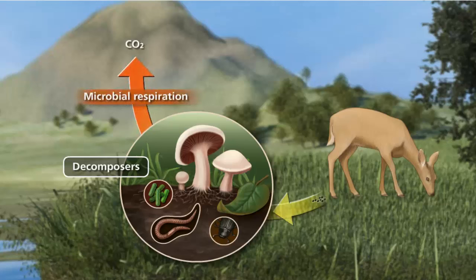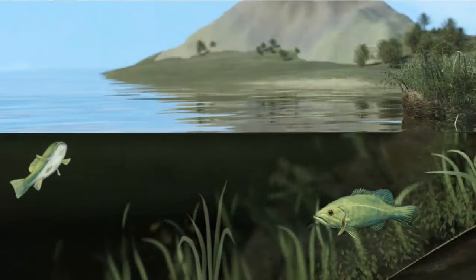In the process of breaking down animal feces, decaying plants, and dead animals, decomposers also release carbon dioxide gas into the atmosphere. Carbon cycles in a similar way through aquatic ecosystems.